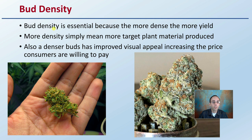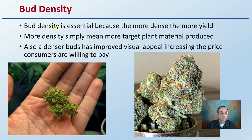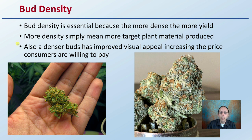Bud density is essential because the more dense, the more yield. Here we see a very dense end flower. Here we see one with a lot less density. More density simply means more target plant material is produced, and also the denser buds have improved visual appeal, increasing the price consumers are willing to pay.